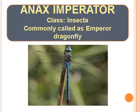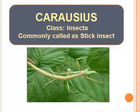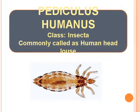Anax Imperator — Class Insecta, commonly called as Emperor Dragonfly. Carausius — Class Insecta, commonly called as Stick Insect. Pediculus Humanus — Class Insecta, commonly called as Human Head Louse.